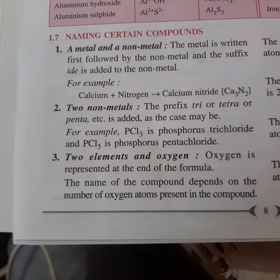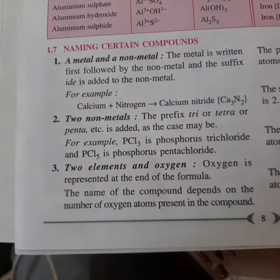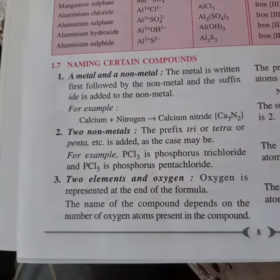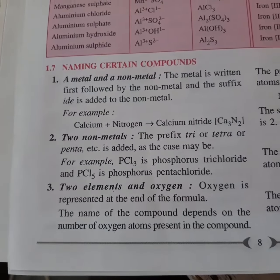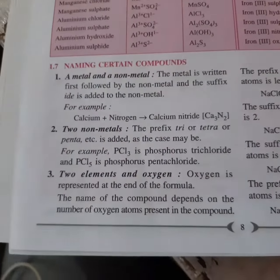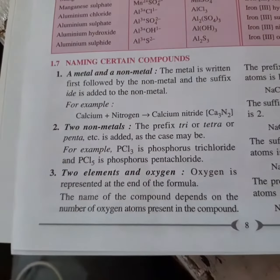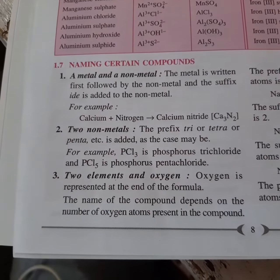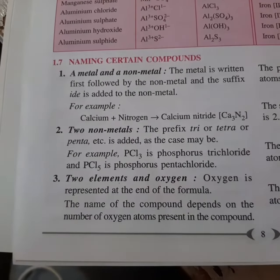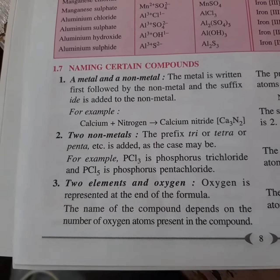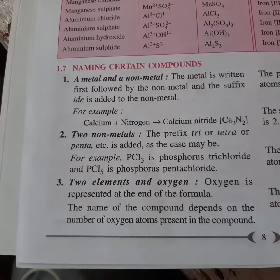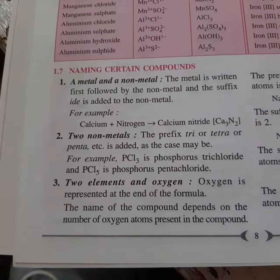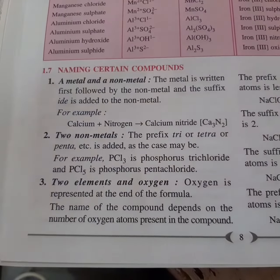Hello 9th class. Today, as we all know, we have learned about elements, the symbols, we have learned about compounds and their formulas. We learned how to write the formula of a compound using the cations or anions, or we can call them basic radicals or acidic radicals. There are certain conditions for all chemical compounds in how to give their names.